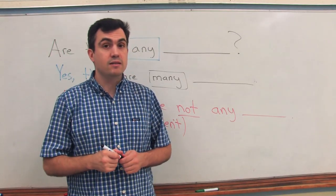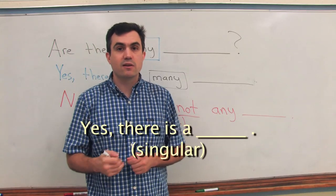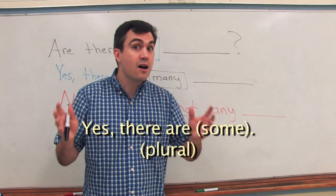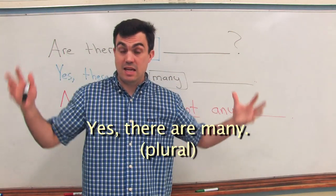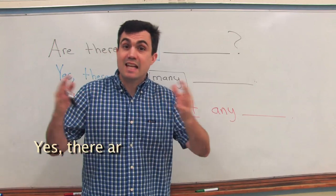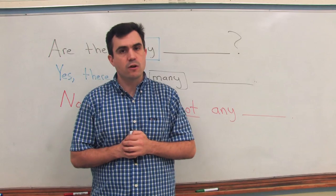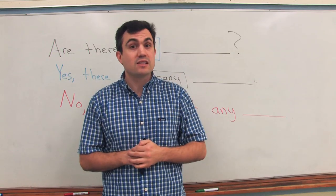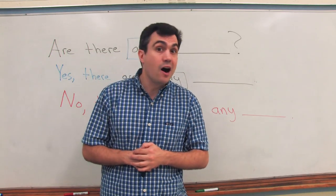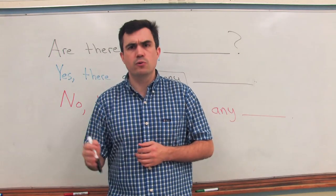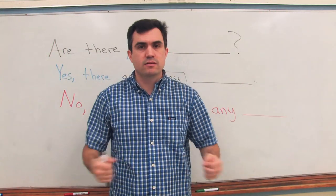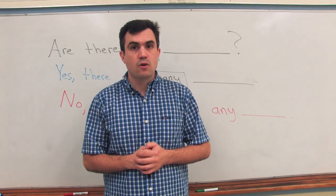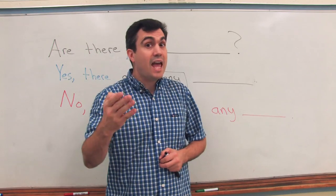Another option: 'many.' So the answer could be singular — 'yes, there is a,' or 'yes, there is one.' Or 'yes, there are some,' 'yes, there are many,' or specific: 'yes, there are ten trees.' So, 'are there any trees?' — 'yes, there is a tree,' 'yes, there is one tree,' 'yes, there are some trees,' 'yes, there are a few,' 'yes, there are many trees,' 'yes, there are several,' 'yes, there are 16 trees' — specific. Or negative: 'No, there aren't any trees.'